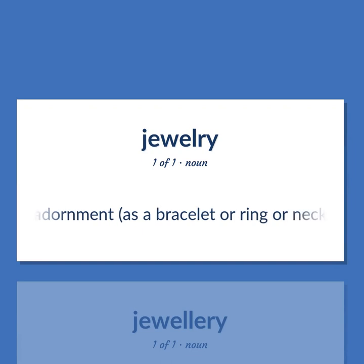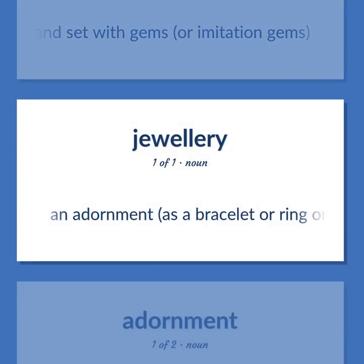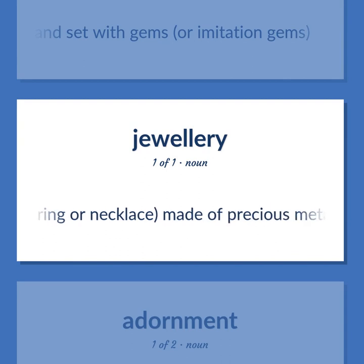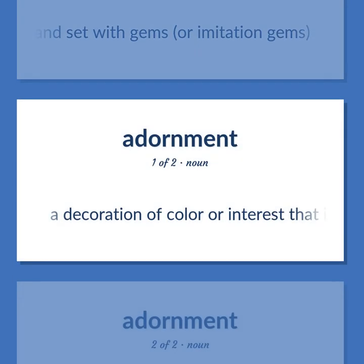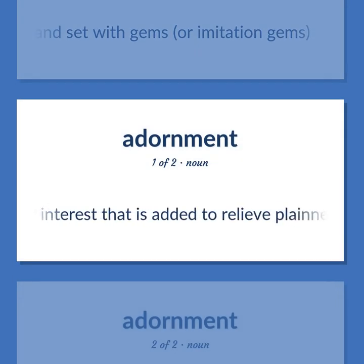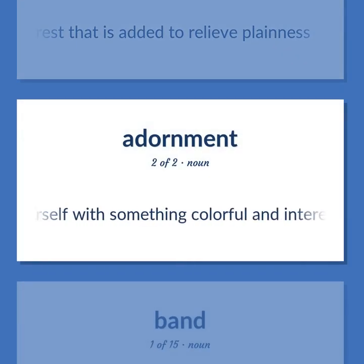An adornment — as a bracelet or ring or necklace — made of precious metals and set with gems or imitation gems. A decoration of color or interest that is added to relieve plainness. The action of decorating yourself with something colorful and interesting.